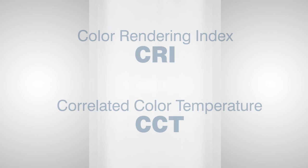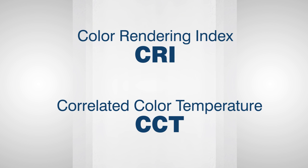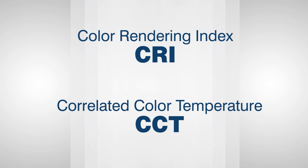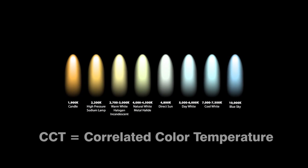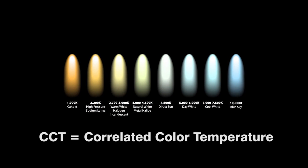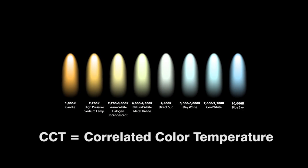CRI should not be confused with CCT, which stands for Correlated Color Temperature. The two are related, but represent different qualities of a lamp's light. CCT is more a measurement of the light given off by the lamp itself.